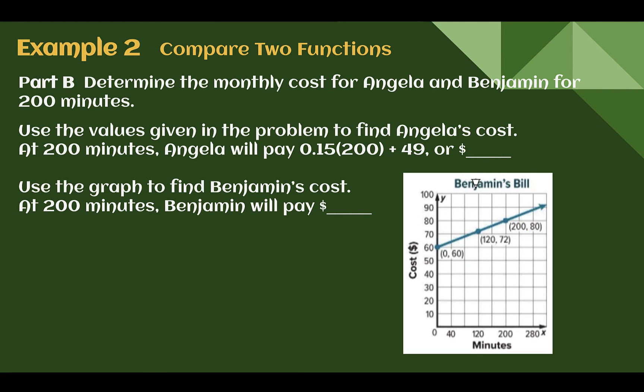Now, let's determine the monthly cost for 200 minutes. So, for Angela, she's going to pay that 15 cents per minute for 200 minutes and still add her $49 initial fee. 200 times 15 cents would come out to be $30.00 plus 49.00. So, $79.00 would be Angela's bill at 200 minutes.